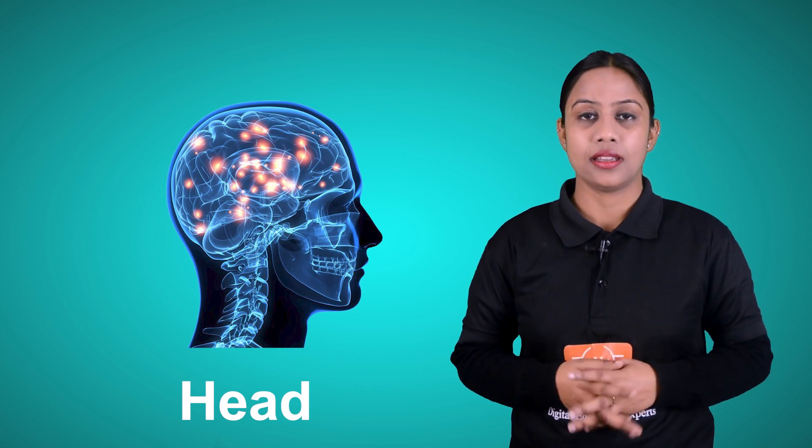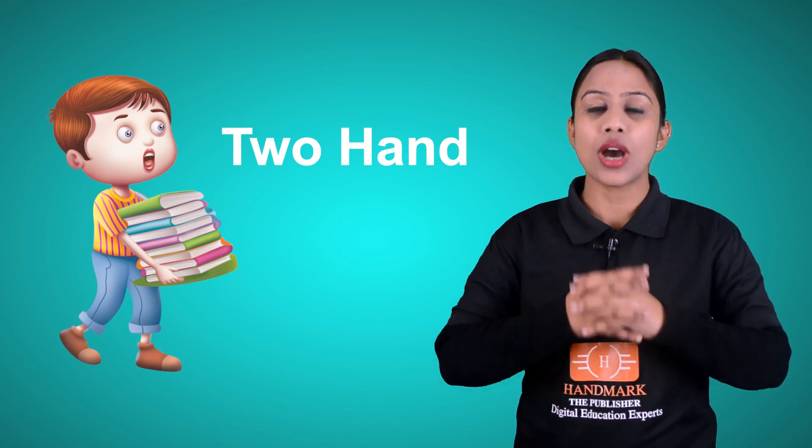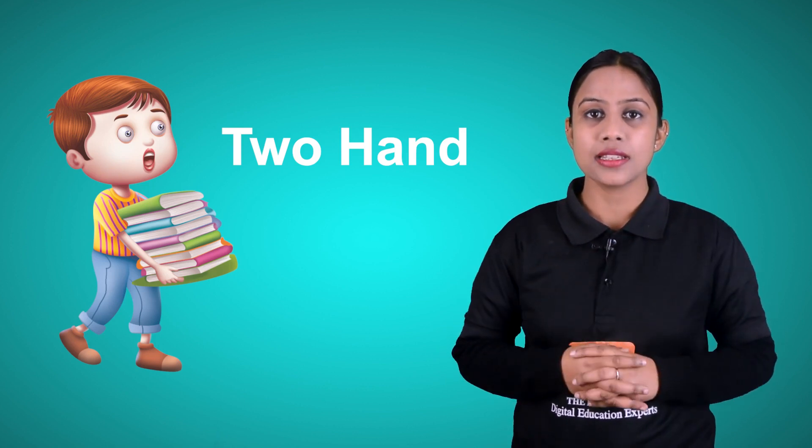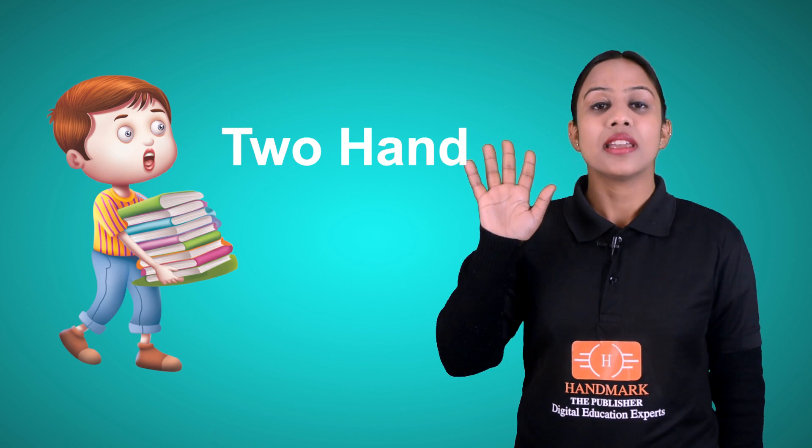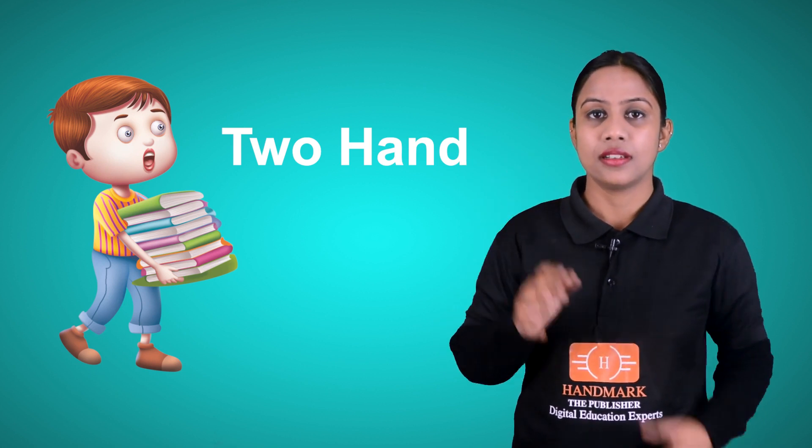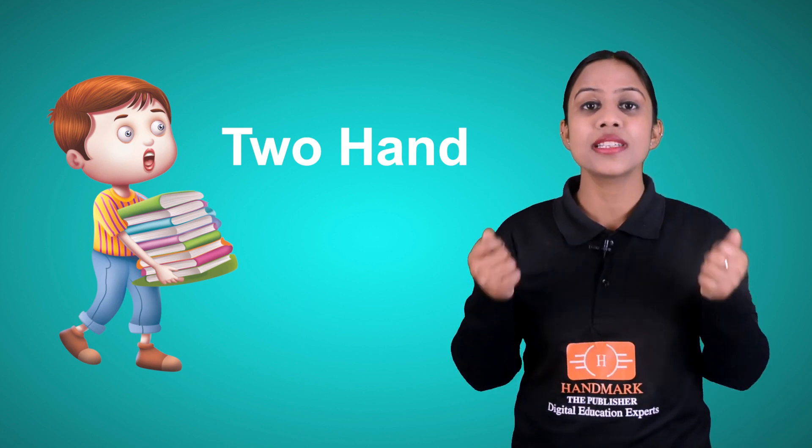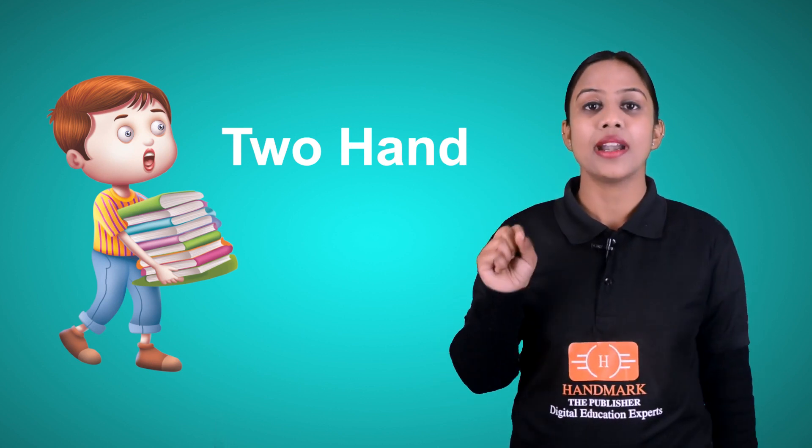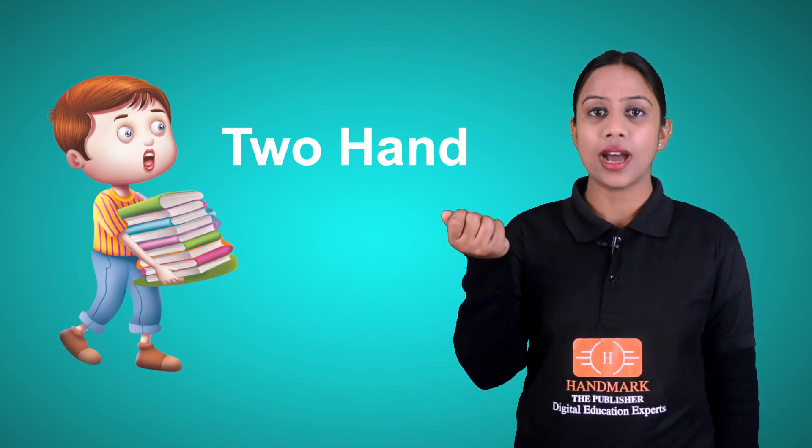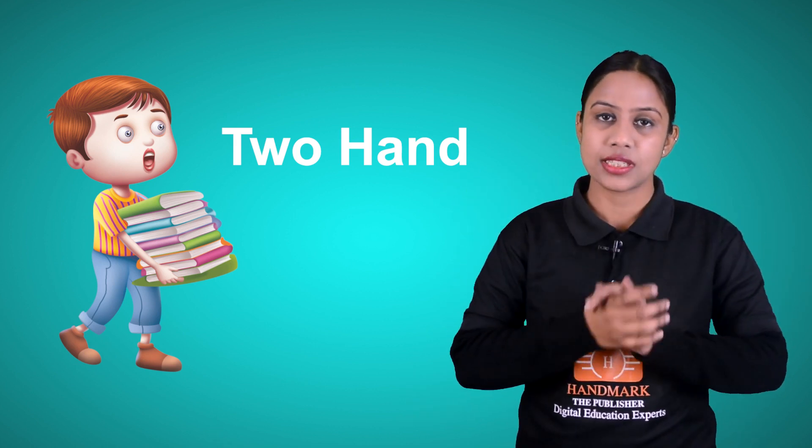We have two arms and two hands and five fingers in each hand. We use our hands for many tasks like to hold something, to pick up things, and many other activities.